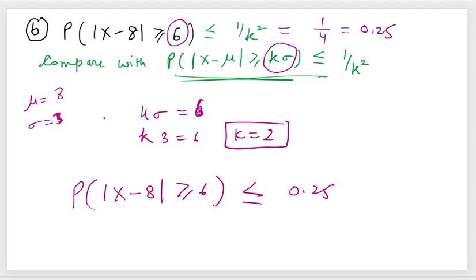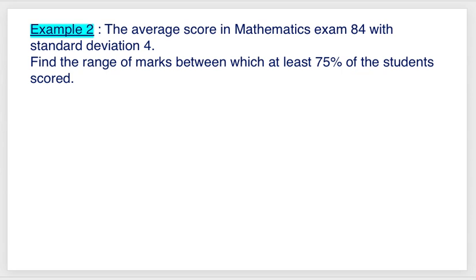Through these two questions, we covered that if you are given the range, you can find the probability using Chebyshev's inequality. For the second example, the average score in a mathematics exam is 84 with a standard deviation of 4. We need to find the range of marks between which at least 75% of students scored.